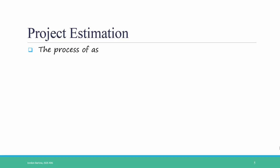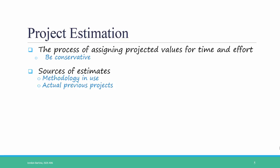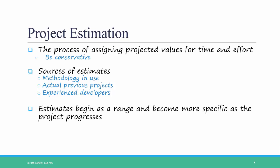Project estimation is the process of assigning projected values for time and effort towards an IT project. This includes scheduling and staffing issues. Always be conservative when estimating how much time and effort you'll need, because you never know what turns a project is going to take. There are many sources you can use to create estimates: first, by the type of development methodology you're using, such as Waterfall or Agile methods; second, based on actual previous projects you've managed; and third, by speaking with experienced developers who have worked on similar projects. At the beginning of a project, estimates begin as a range but become more specific as the project progresses.